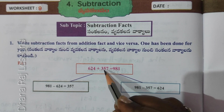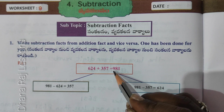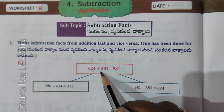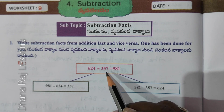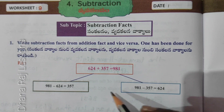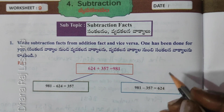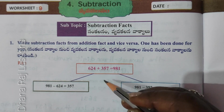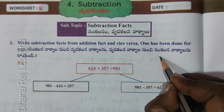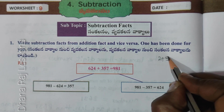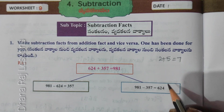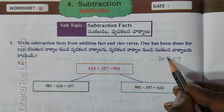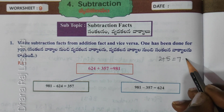624 plus 357 equal to 981. There is another plus here — this is an Addition Fact. From Sankalna Vakiyalanu, we derive a Subtraction Fact.